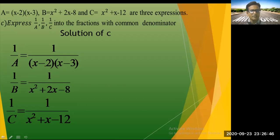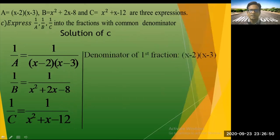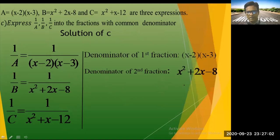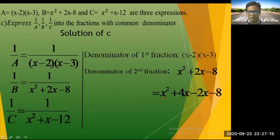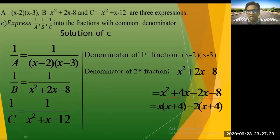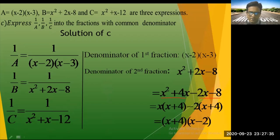Now find the factor of C = x² + x - 12. We need two numbers with product -12 and sum +1. Check: 4 × (-3) = -12 ✓ and 4 + (-3) = 1 ✓. So rewrite as x² + 4x - 3x - 12, group: x(x + 4) - 3(x + 4) = (x + 4)(x - 3).